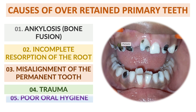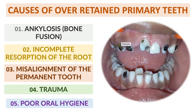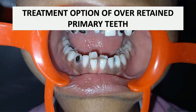Poor oral hygiene can also result in damage to the permanent tooth before it erupts, causing resorption in the jaw, and the baby teeth will remain in position. So always maintain oral hygiene and keep the deciduous teeth clean. There are two treatment options for over-retained deciduous primary teeth.